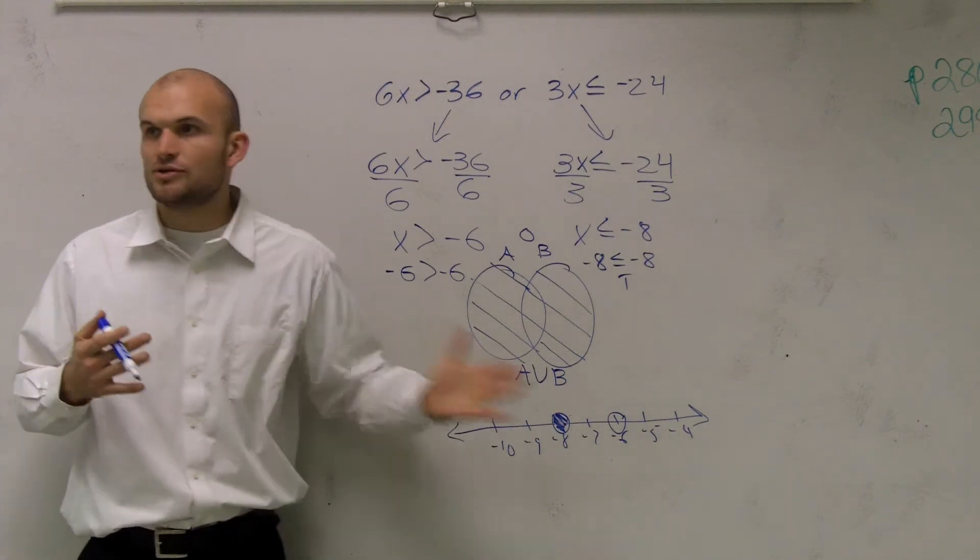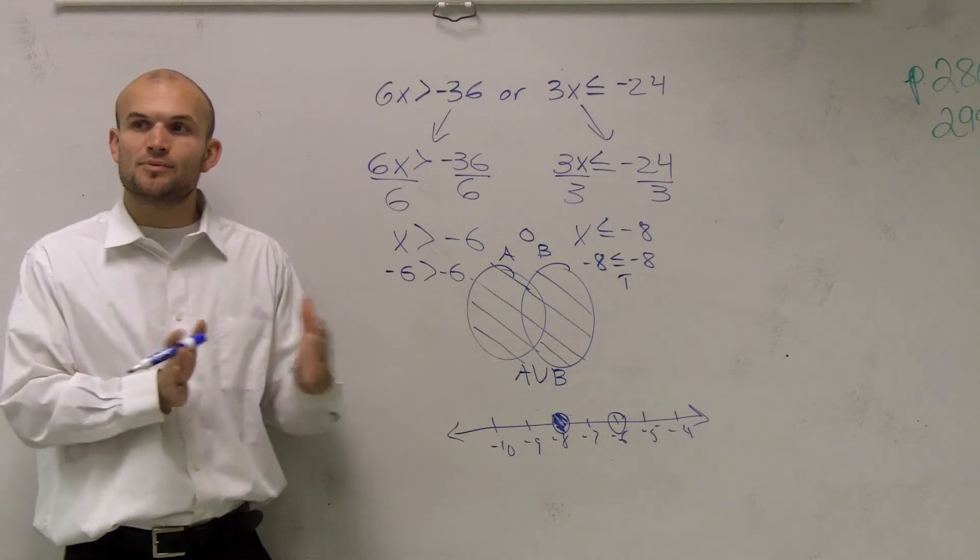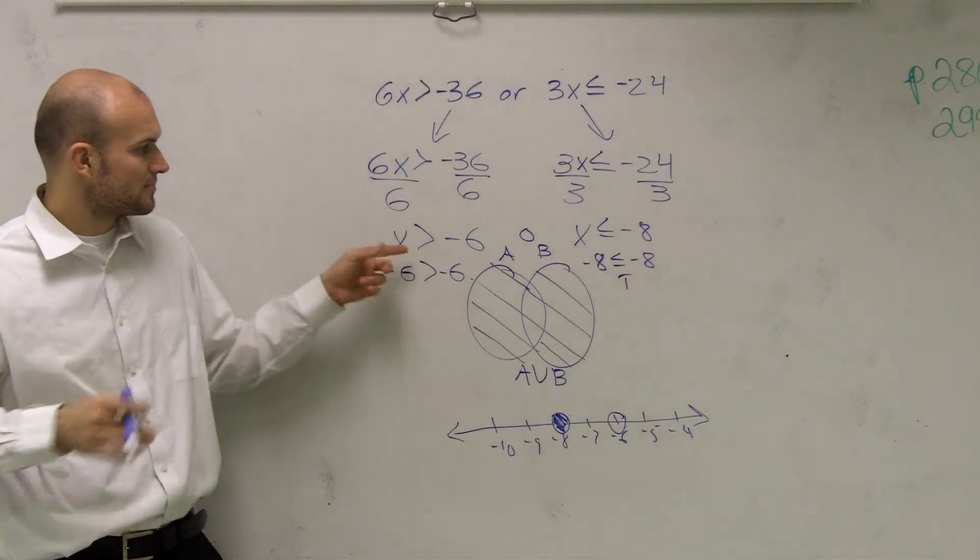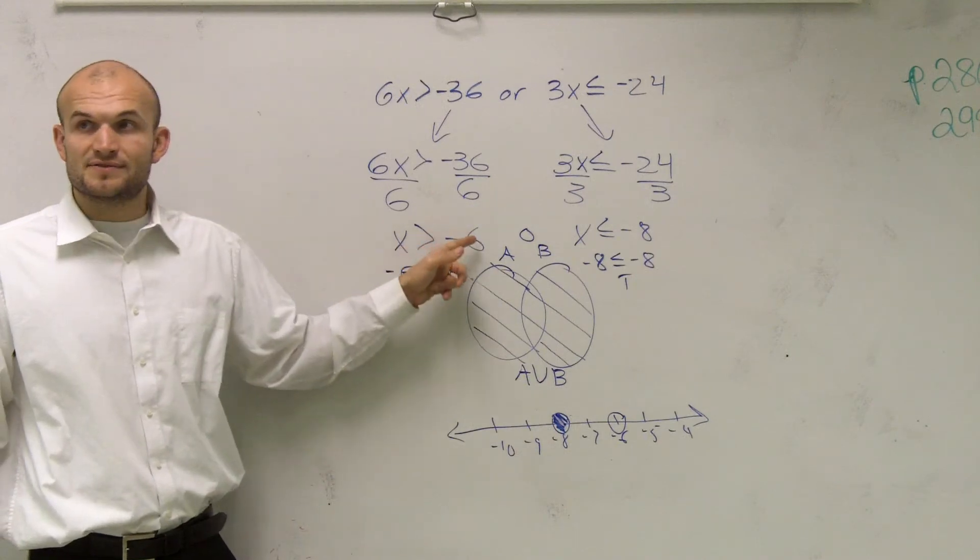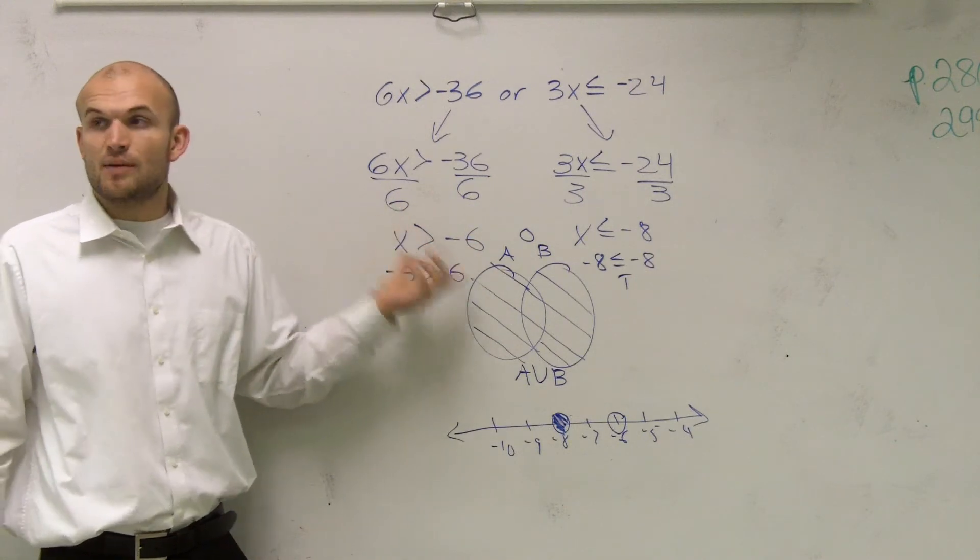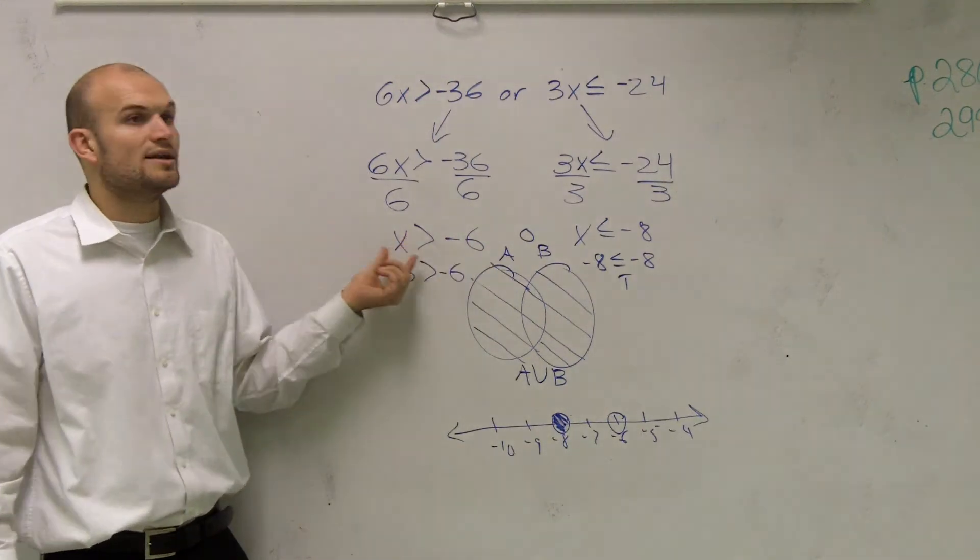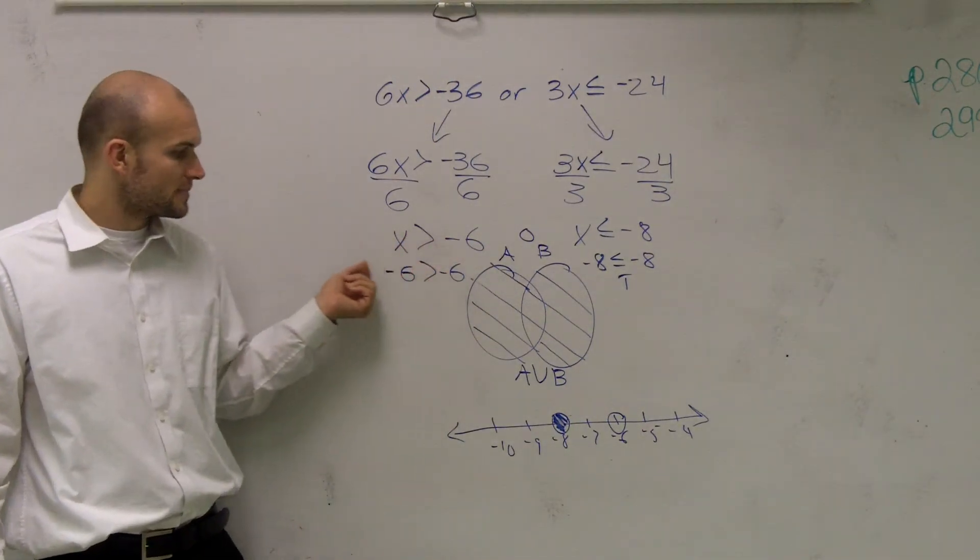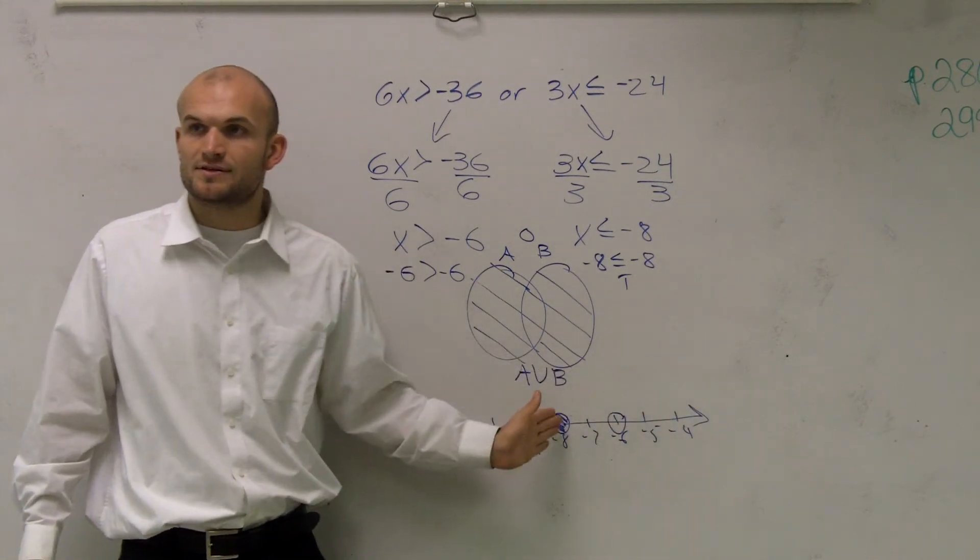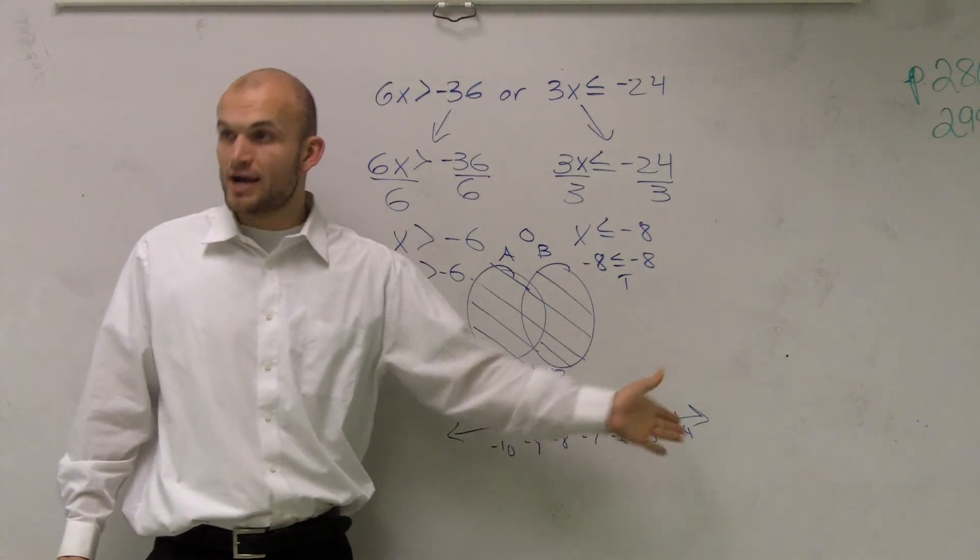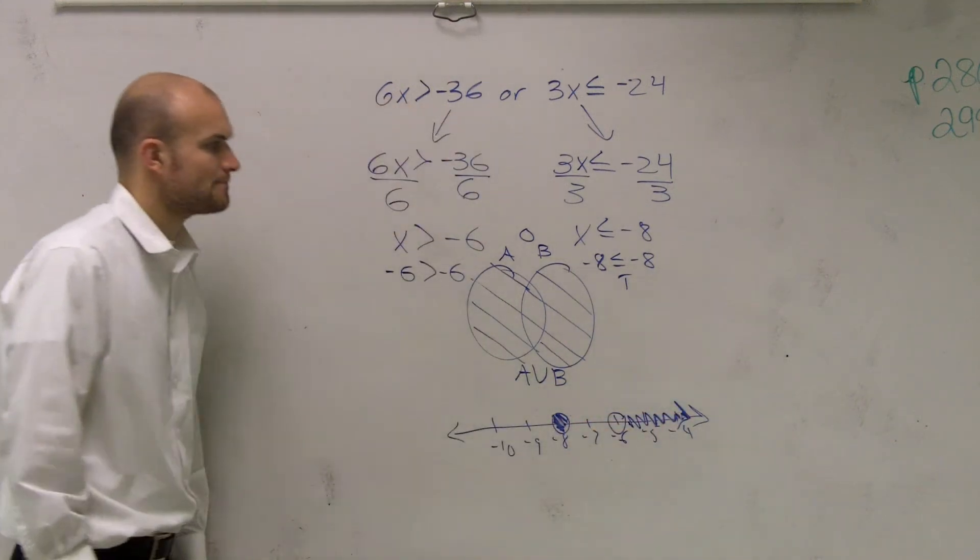Now, ladies and gentlemen, we can do our test points if you're having trouble with this. But if you also just say it out loud, you can probably help yourself pick the right direction. X, meaning all numbers, are greater than negative 6. So whatever numbers make this true is where we're going to shade. So what numbers are greater than negative 6? Well, is that going to go to the right or to the left? Right. Numbers to the right are greater than. Goes like that.